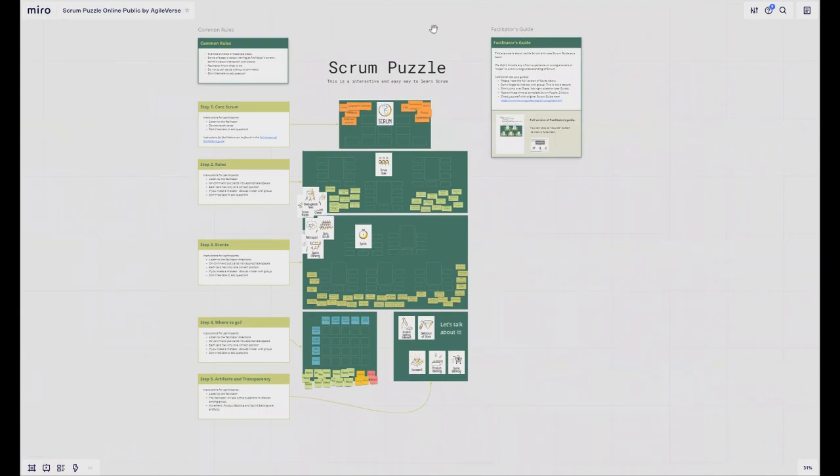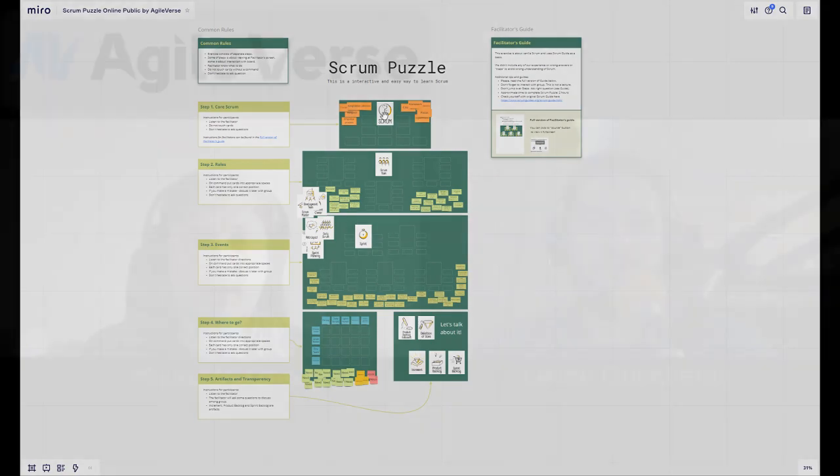After completing, you can see the whole picture of Scrum Puzzle and you can see all the parts of Scrum. You can jump to details, you can fly to the whole picture, and that's it. Your people know what Scrum is. That was the Scrum Puzzle tool and that's all of the details of Scrum.